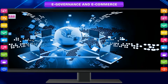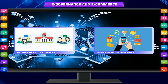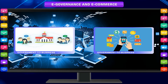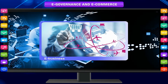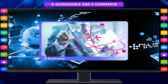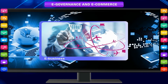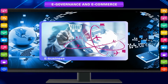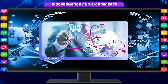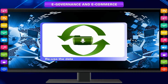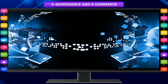Government to Business is the online, non-commercial interaction between local and central government and the commercial business sector, with the purpose of providing businesses information and advice on e-business best practices. It refers to the conduction through the Internet between government agencies and trading companies. The objective of G2B is to reduce difficulties for business, provide immediate information, and enable digital communication by e-business and XML. In addition, the government should reuse the data in reports.